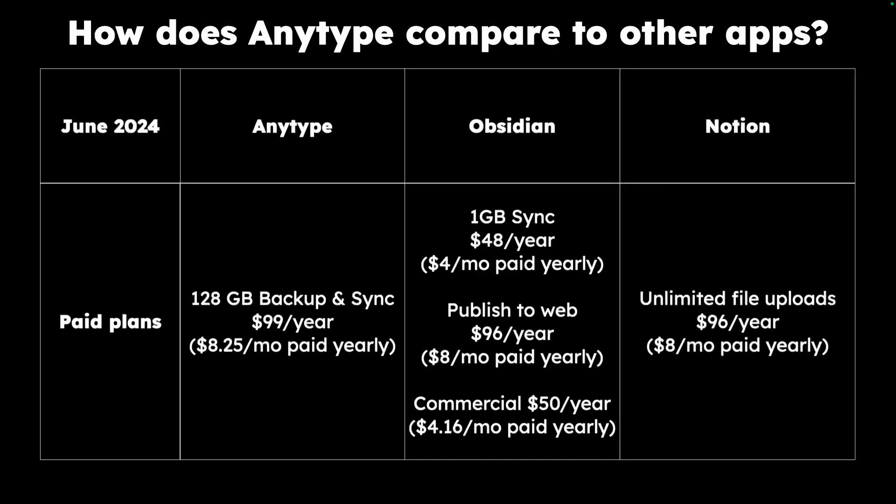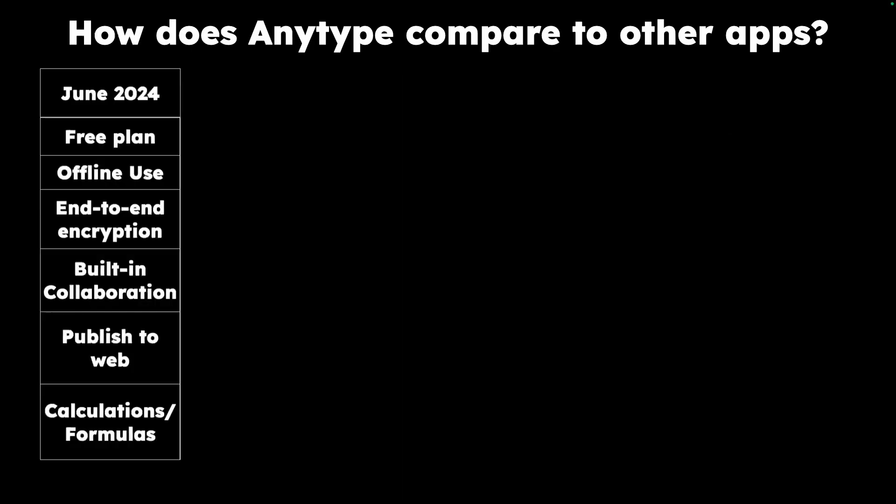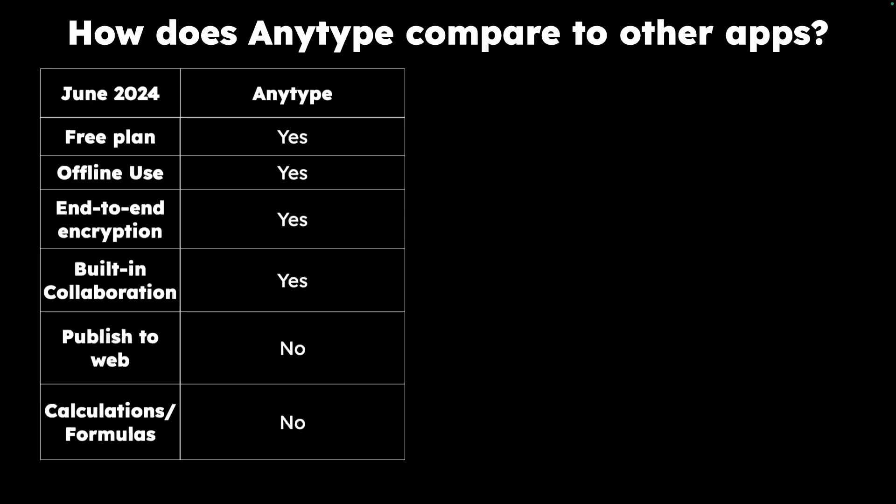For Notion, they have unlimited file uploads and their lowest plan starts at $96 per year. The main differences are on the next chart. AnyType does offer a free plan and the main benefit is that you have offline use of your AnyType vault and it's end-to-end encrypted.